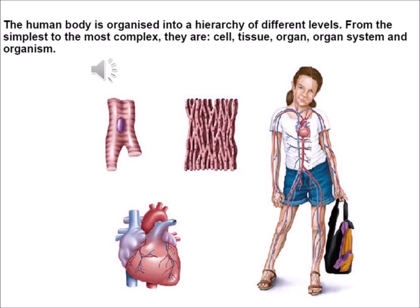The human body is organized into a hierarchy of different levels. From the simplest to the most complex, they are cell, tissue, organ, organ system, and organism.